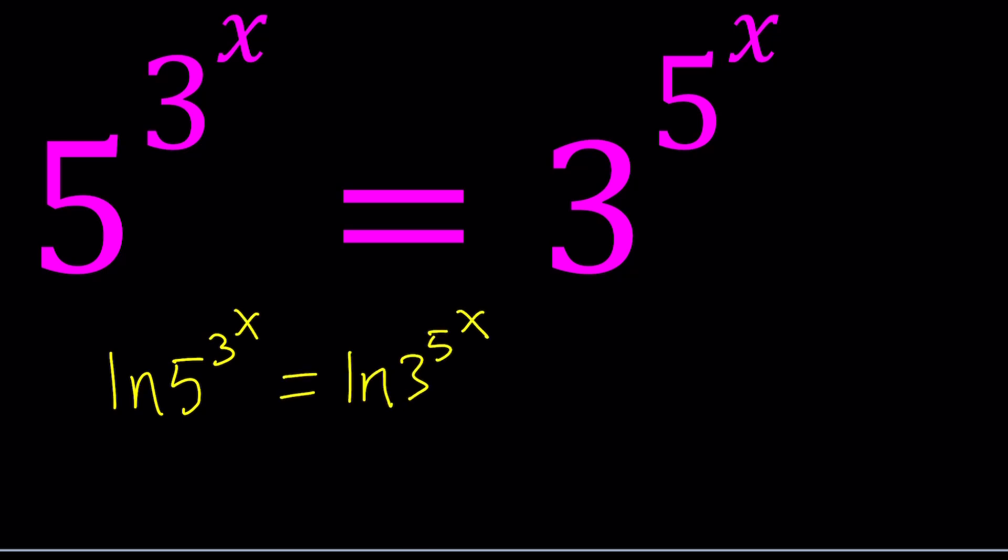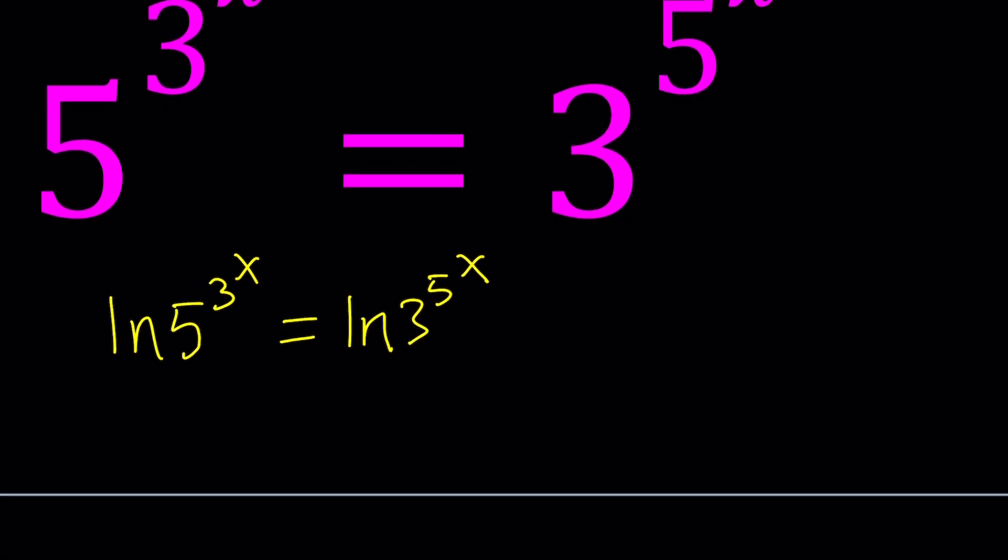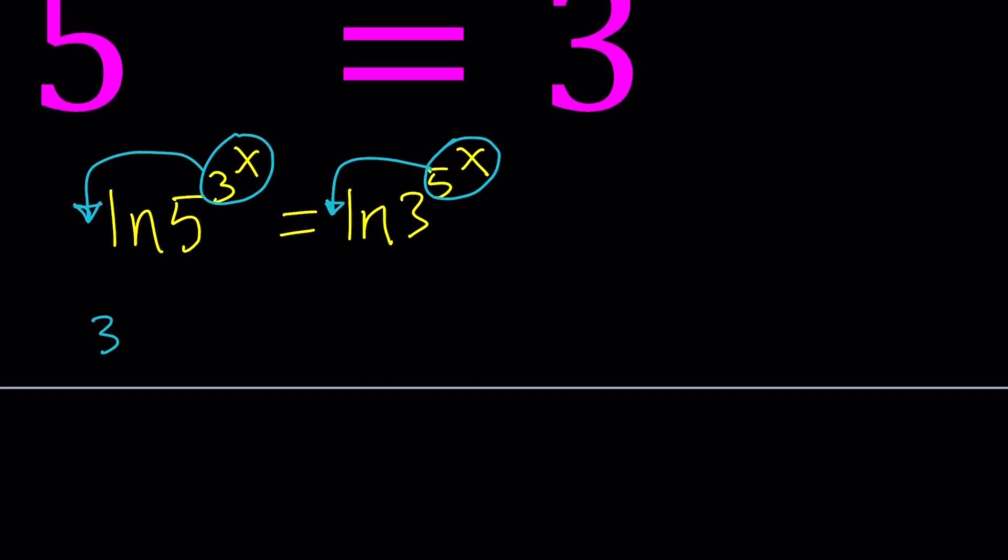What is good about logging both sides, and again the base doesn't matter, is you can go ahead and bring these down. Notice that those are variable exponents and you don't want to keep them up there. Because it will be impossible to solve or maybe very hard.